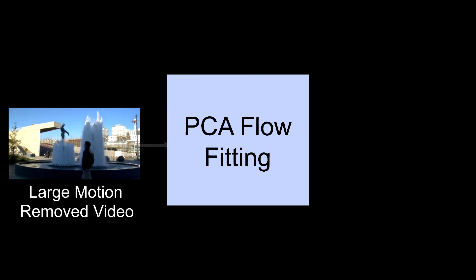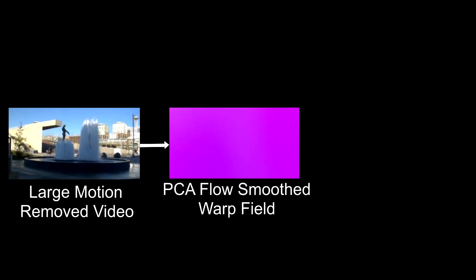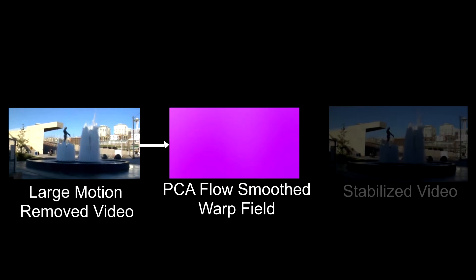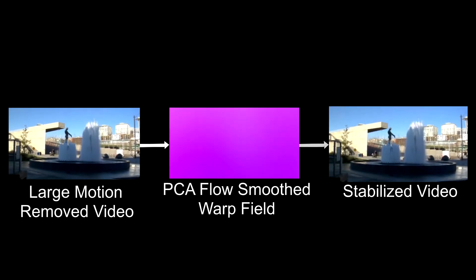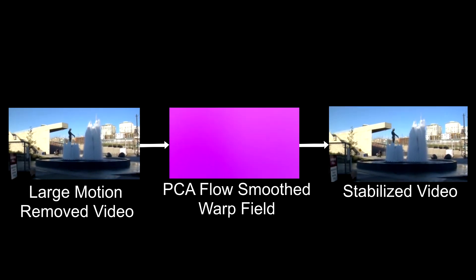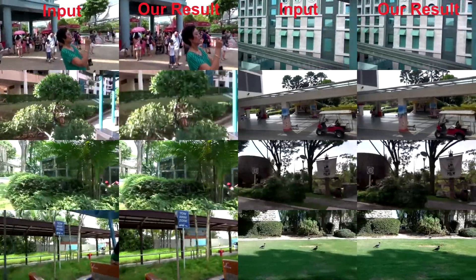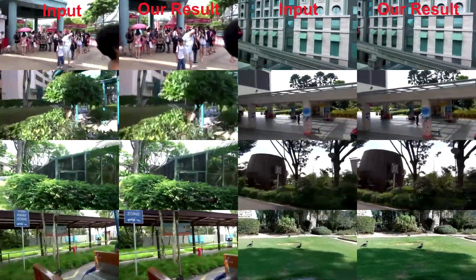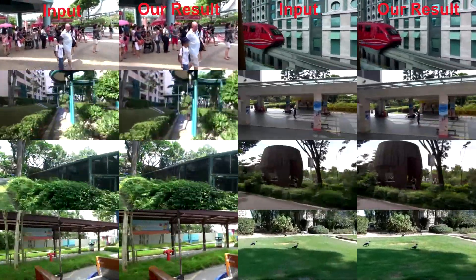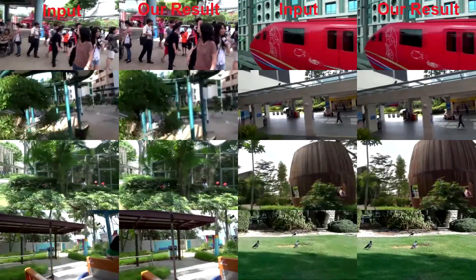We fit the PCA flow to the valid regions and use the fit as the final warp field. We warp each frame using the warp field and generate a stable video. Our method is designed to be robust in a variety of scenarios where the optical flow is inaccurate.